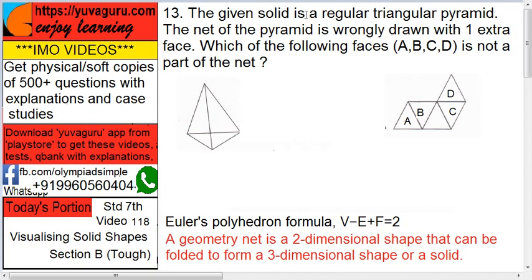A given solid is a regular triangular pyramid. The net of the pyramid is wrongly drawn with one extra face. Which of the following faces A, B, C, D is not part of the net?